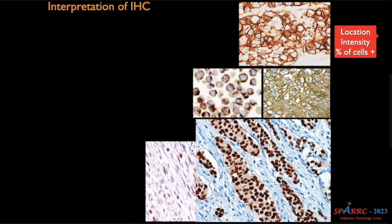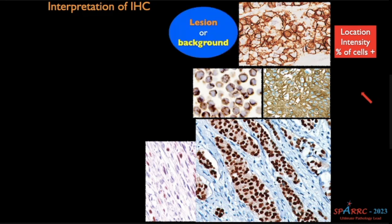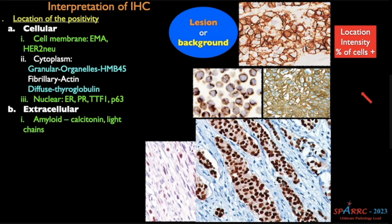Interpretation of IHC is very important. Three things to assess: location, intensity of the chromogen, and percentage of cells positive. Always make sure the IHC staining is present in the lesion and not in the background. Regarding location, the cell is made up of cell membrane, cytoplasm, and nucleus, so you need to see whether the marker is in the cell membrane, cytoplasm, or nucleus.